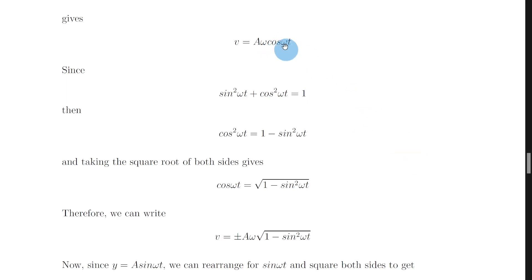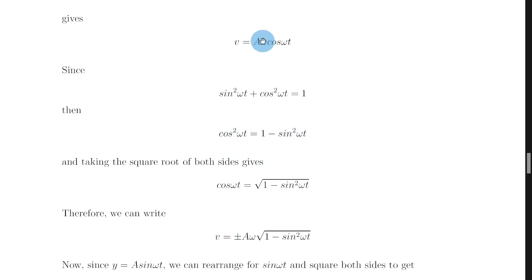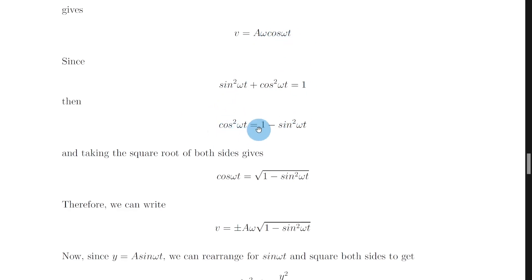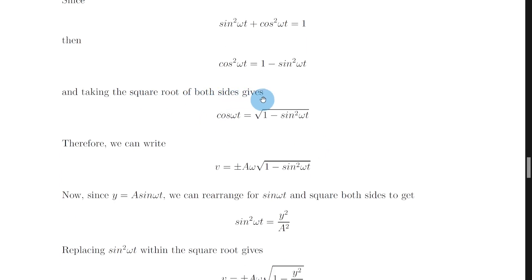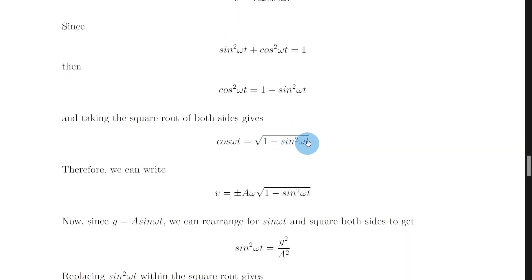What we essentially want to do is replace the cos omega t expression. So let's rearrange to get cos squared omega t first, by subtracting sine squared omega t from both sides, giving cos squared omega t equals 1 minus sine squared omega t. To replace cos omega t we need an expression for cos omega t, not cos squared omega t, so we take the square root of both sides. The square root of cos squared omega t cancels the square, leaving cos omega t equals the square root of 1 minus sine squared omega t.